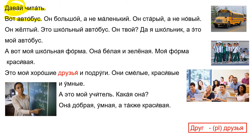Вот автобус. Он большой, а не маленький. Он старый, а не новый. 'А' means opposition. Он желтый. Это школьный автобус. Он твой. Да, я школьник, а это мой автобус. А вот моя школьная форма. Она белая и зелёная. Моя форма красивая.